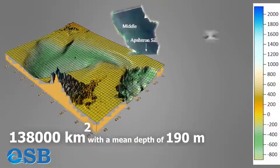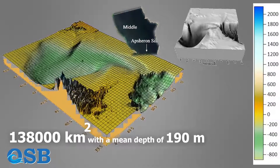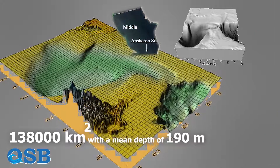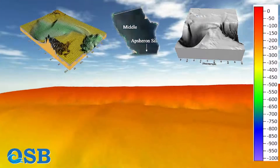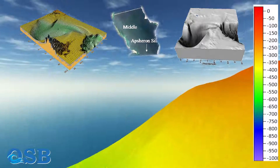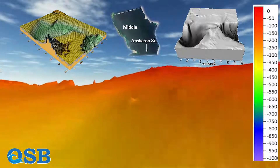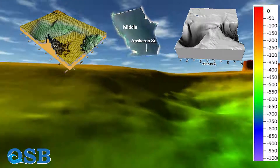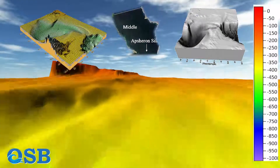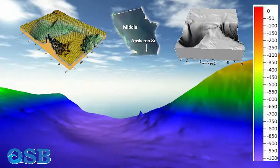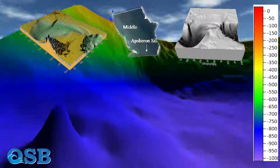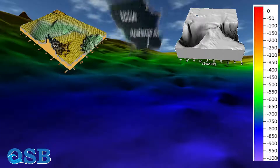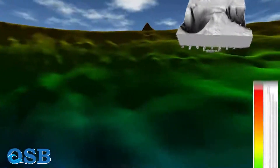The middle part has an area of 138,000 km² with a mean depth of 190 meters. There is the Absheron Sill in the middle part near the Azerbaijan coast, which separates the middle and southern parts. The bottom has a continental-type crustal structure and the bed is made of Hercynian rock. Fine-grained terrigenous material accumulates on the narrow western shelf, while biogenic carbonate sedimentation is found on the eastern shelf.